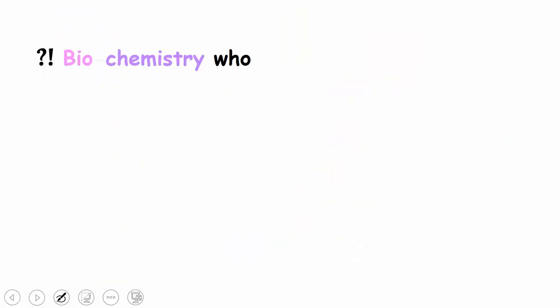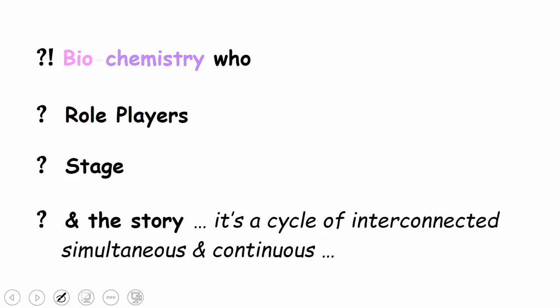Just to recap, we have defined biochemistry and the basics behind this naming. Who are the role players that are involved, which are the micro and macromolecules? What is the stage in which those role players act? The cell. And the story behind biochemistry, which turns out to be a cycle of interconnected simultaneous and continuous pathways. Which leads us to the reason by which biochemistry doesn't seem to be a very pleasant subject to many students. Hopefully, we will be able to beat that in the future videos.